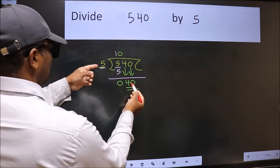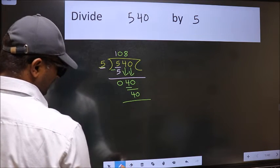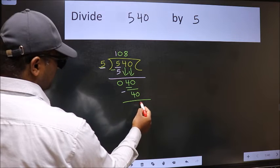When do we get 40 in the 5 table? 5 eights 40. Now we should subtract. We get 0.